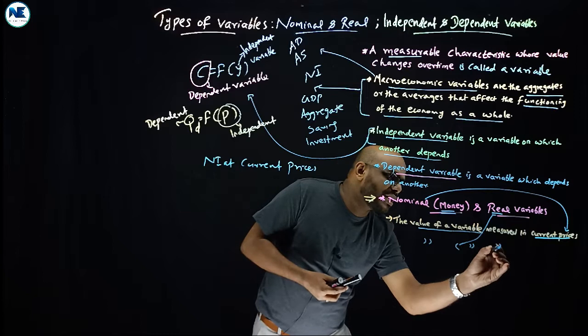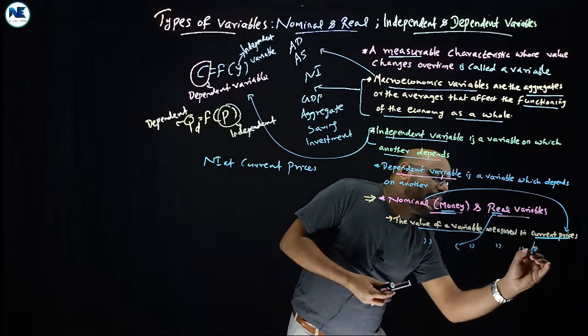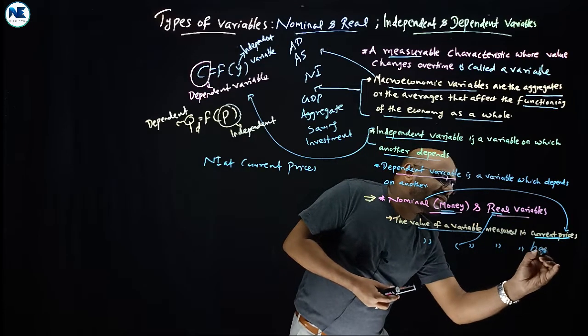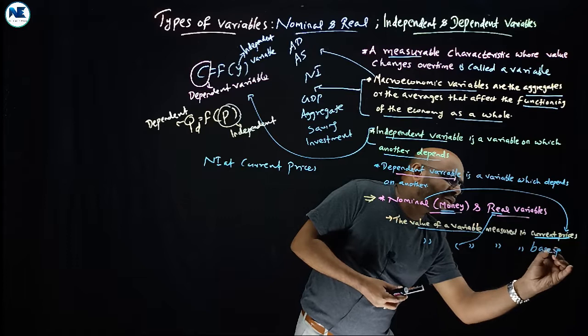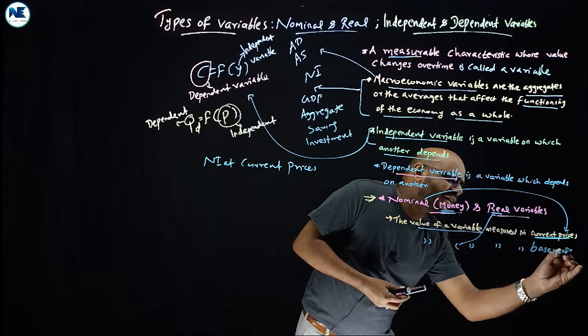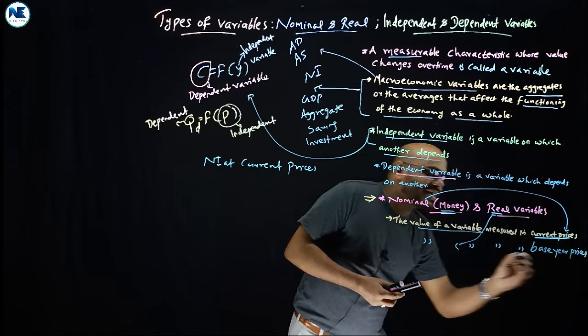What about real variables? A real variable is one where the value of a variable is measured in base-year prices — also called constant prices. This is very important: instead of using current prices, you use the prices that existed in the base year, removing the effect of inflation or deflation.